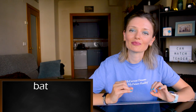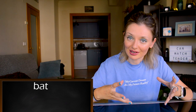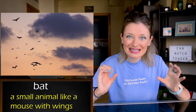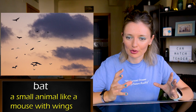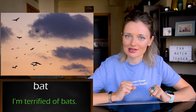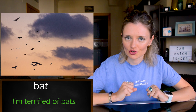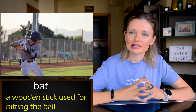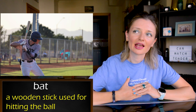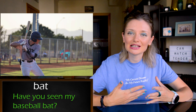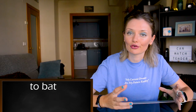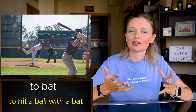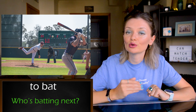Number three: 'bat' — American pronunciation — or 'bat,' British. The first meaning is a small animal like a mouse with wings that flies at night. For example: 'I'm terrified of bats.' True story. The second meaning is a wooden stick used for hitting the ball, for example in baseball: 'Have you seen my baseball bat?' And it can also be a verb — to bat — which means to hit a ball with a bat. For example: 'Who is batting next?'